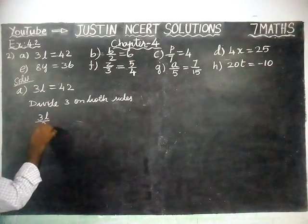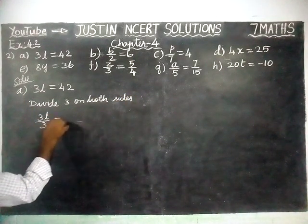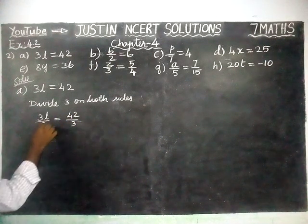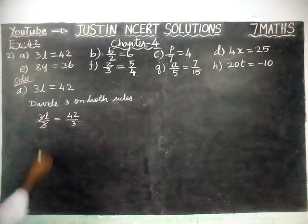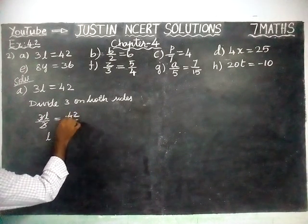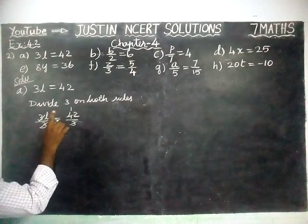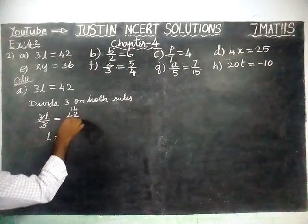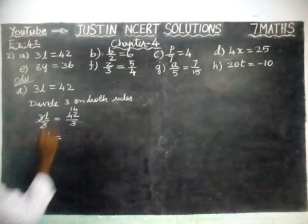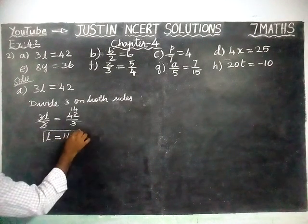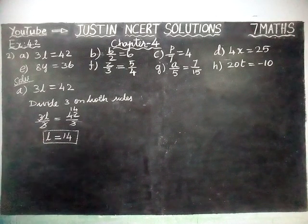3L divided by 3 is equal to 42 divided by 3. The 3s get cancelled. L is equal to — 1 three is 3, remaining 1. Then 12 into 12: 4 threes are 12. So L is equal to 14. Value of L is equal to 14.